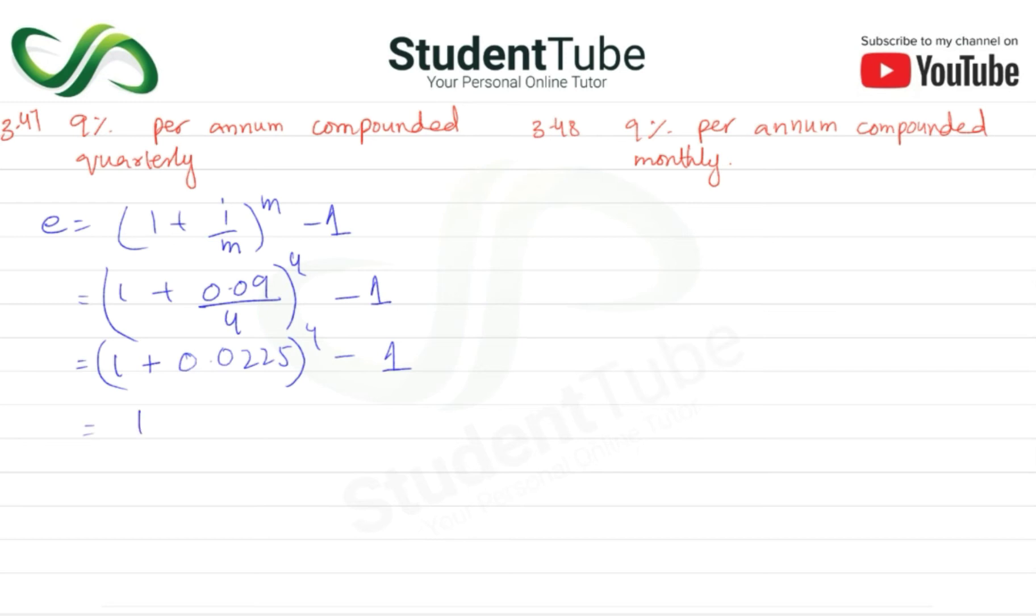So 1 plus, and to the power 4, we will have 1.0931, minus 1 this will be 0.0931. For percentage, multiply by 100, we will have 9.31%.